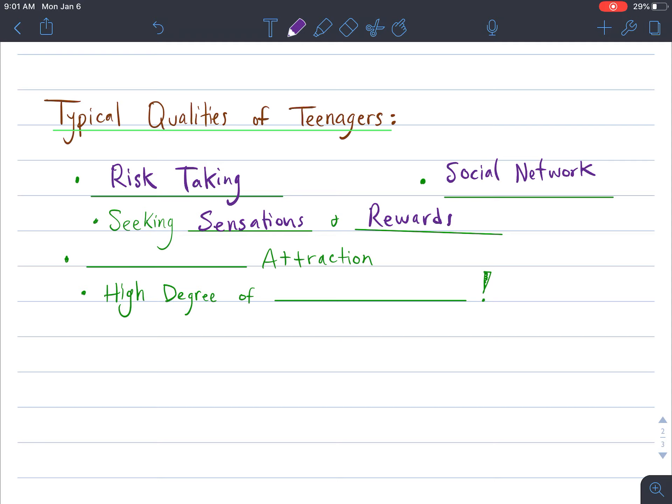And then also gaining rewards like feeling good after accomplishing something like winning a race. Also teenagers are typically starting to find some form of romantic attraction with some other partner or someone else that they become attracted to romantically.